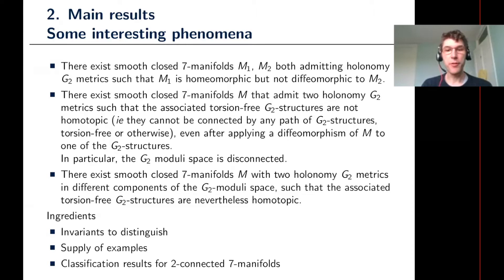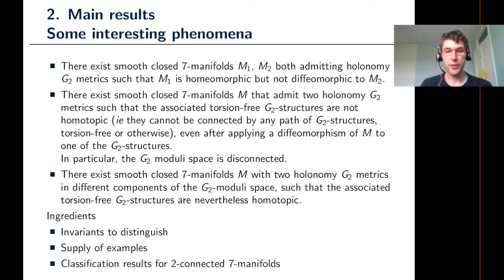Another interesting class of examples: you can find holonomy G2 metrics on different components of the moduli space, even though you can actually prove it's possible to deform one torsion-free G2 structure to another through non-torsion-free G2 structures. If you could deform one to the other through torsion-free G2 structures, they would have to be in the same component of the moduli space — but you can have a deformation through non-torsion-free G2 structures while proving there is no deformation through torsion-free ones. Basically the tools you need are invariants capable of distinguishing different things, the ability to generate lots of examples and compute all the invariants, and classification results that allow you to show different examples are equivalent up to a point but not beyond.